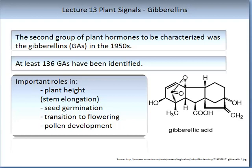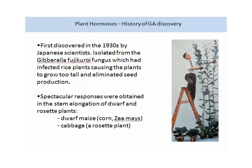Gibberellic acid was first discovered in the 1930s by Japanese scientists. It was isolated from a fungus which it was then named after. This fungus had infected rice plants, causing the plants to grow too tall and eliminating seed production. Spectacular responses were obtained from experiments on cabbage, a rosette plant. Normal plants without additional GA are shown on the left-hand side.